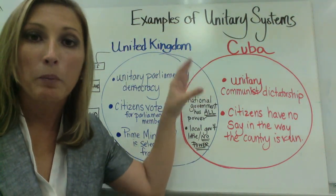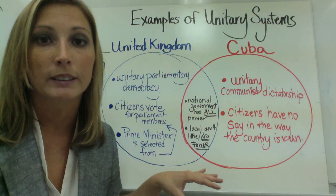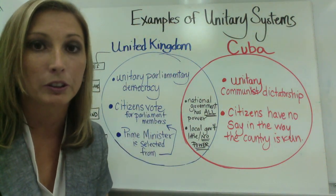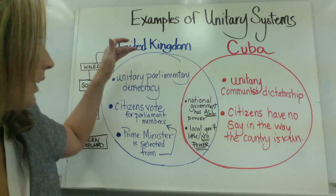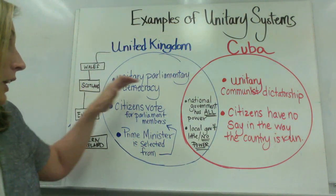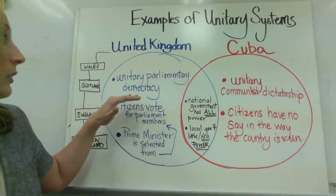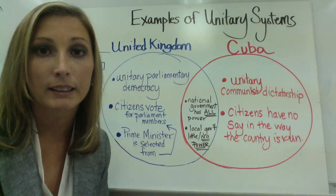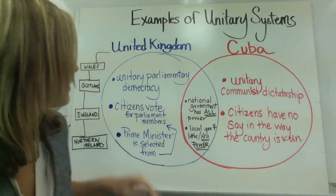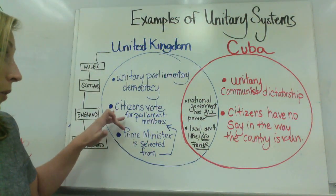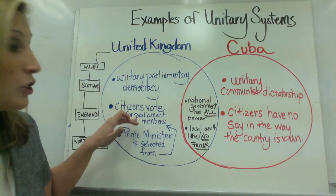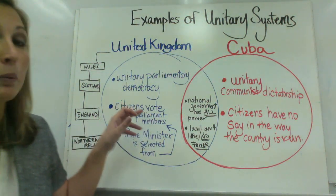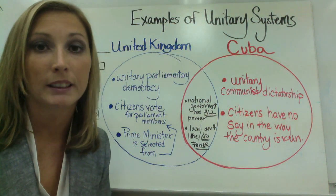Even though they both fall under unitary systems, there are very diverse differences between the two countries. For example, the United Kingdom operates under a unitary parliamentary democracy — we'll get more into that when we discuss types of government. Citizens vote for parliament members, and in turn the prime minister is selected from those elected parliament members.